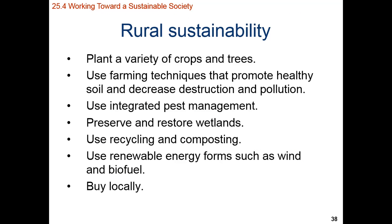If we look at rural areas, particularly in the United States, they need to plant more varieties of crops and have more tree variety as well. There also needs to be more multi-use farming techniques — polygenic crop practices where we have multiple species planted in the field at the same time, contour plowing, no-till plowing, or biological pest control. We need more restoration of wetlands, increased recycling and composting, and increases in renewable energy forms such as wind and biofuel.